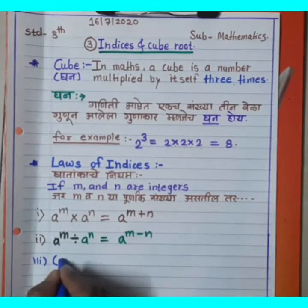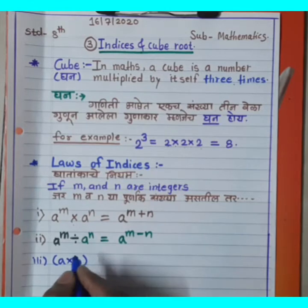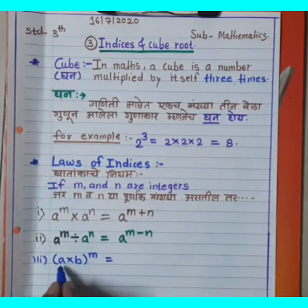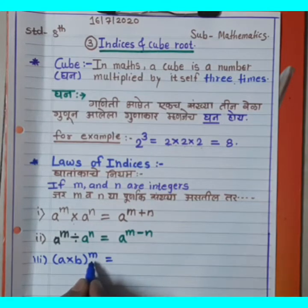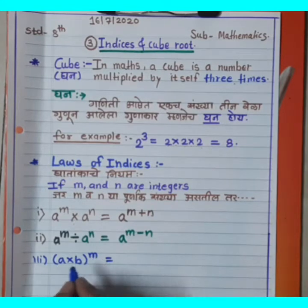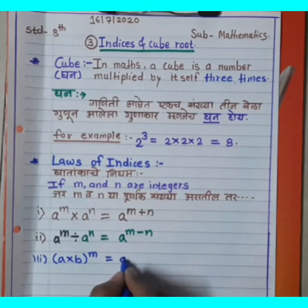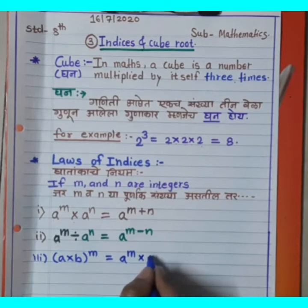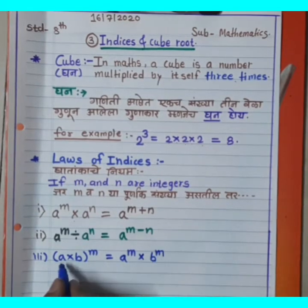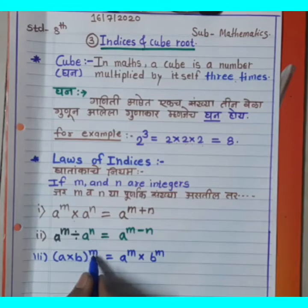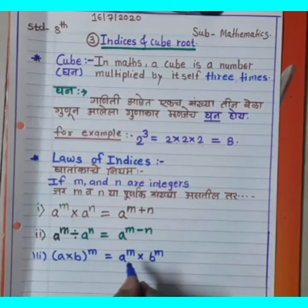Third Rule: (A into B) raise to M is equal to A raise to M multiplied by B raise to M. That is, (A × B)^M = A^M × B^M.